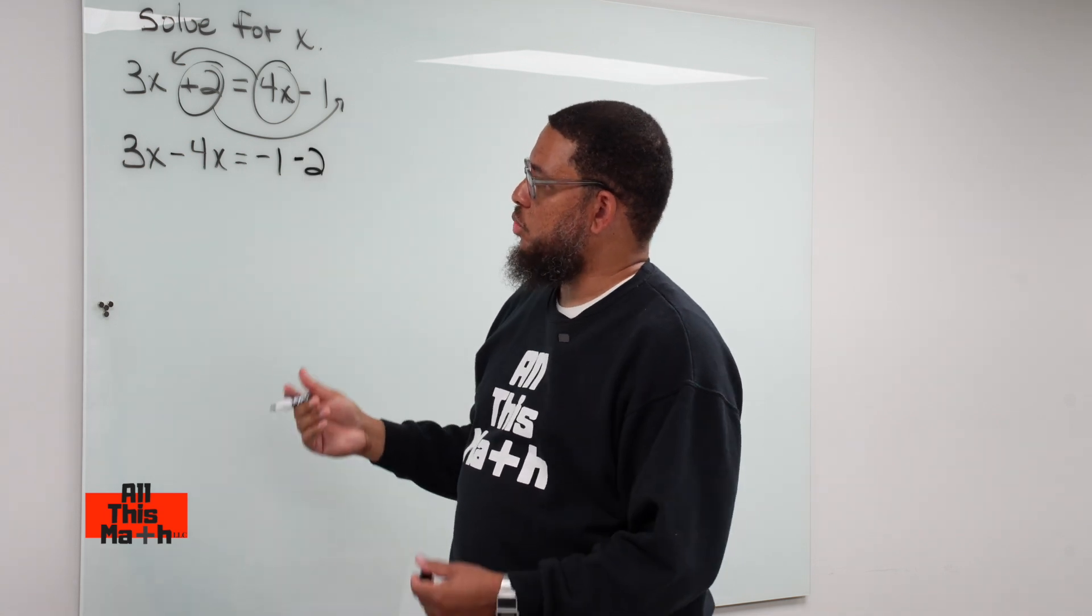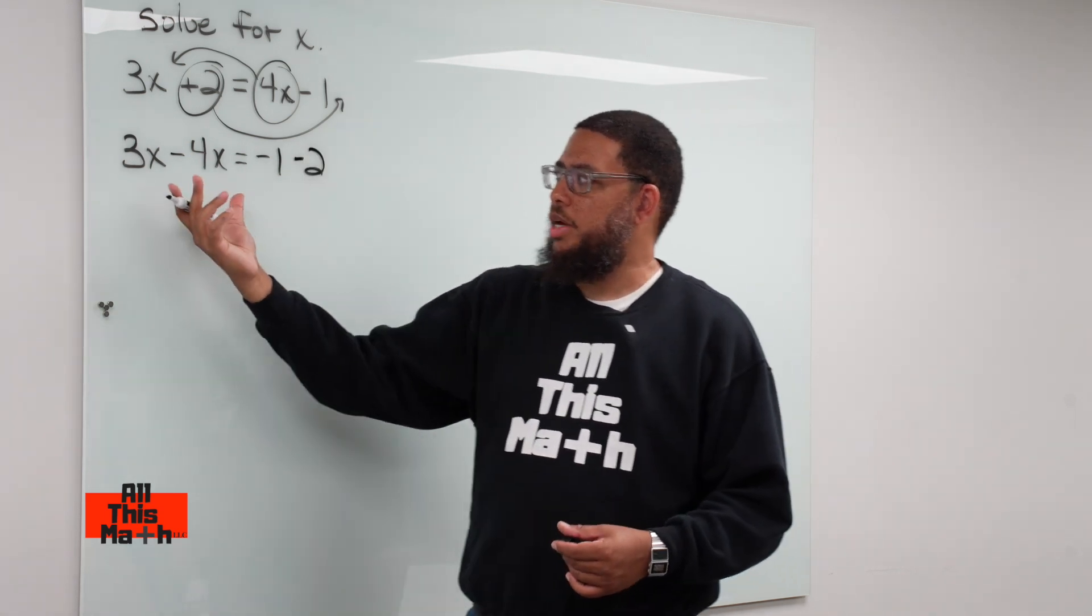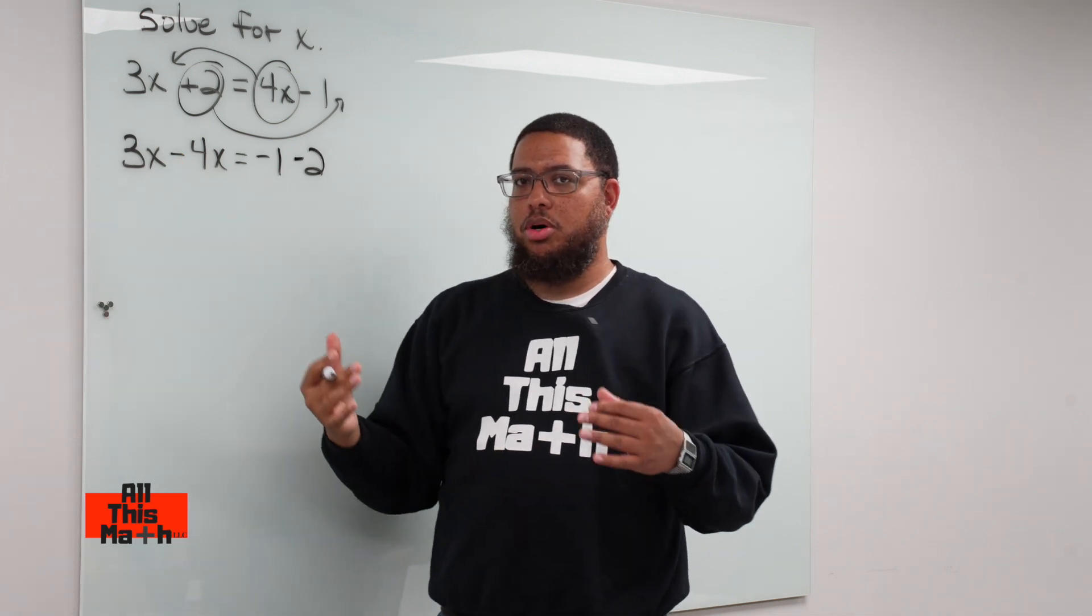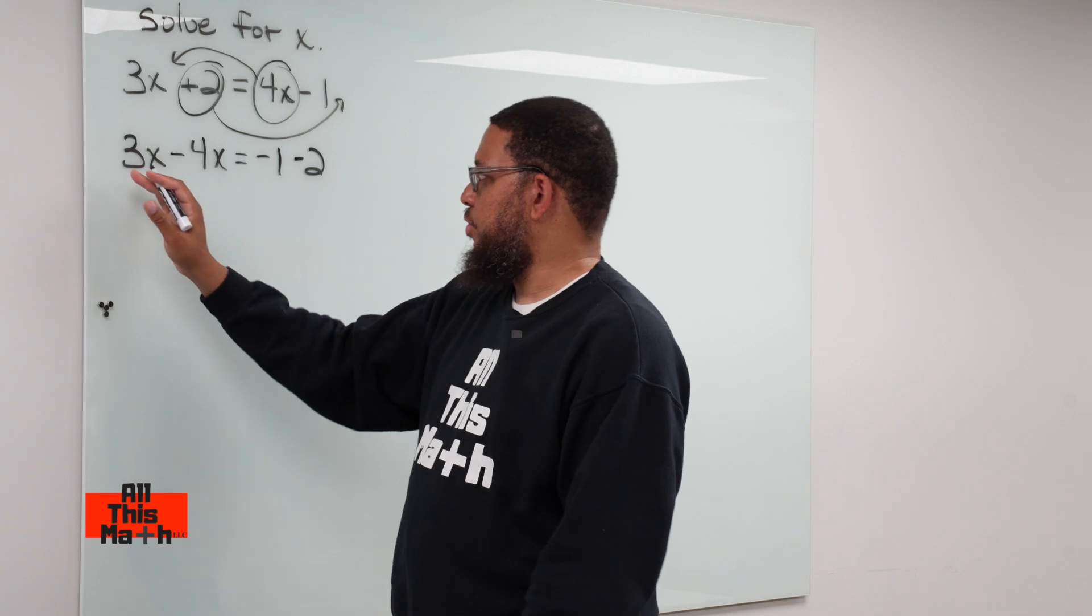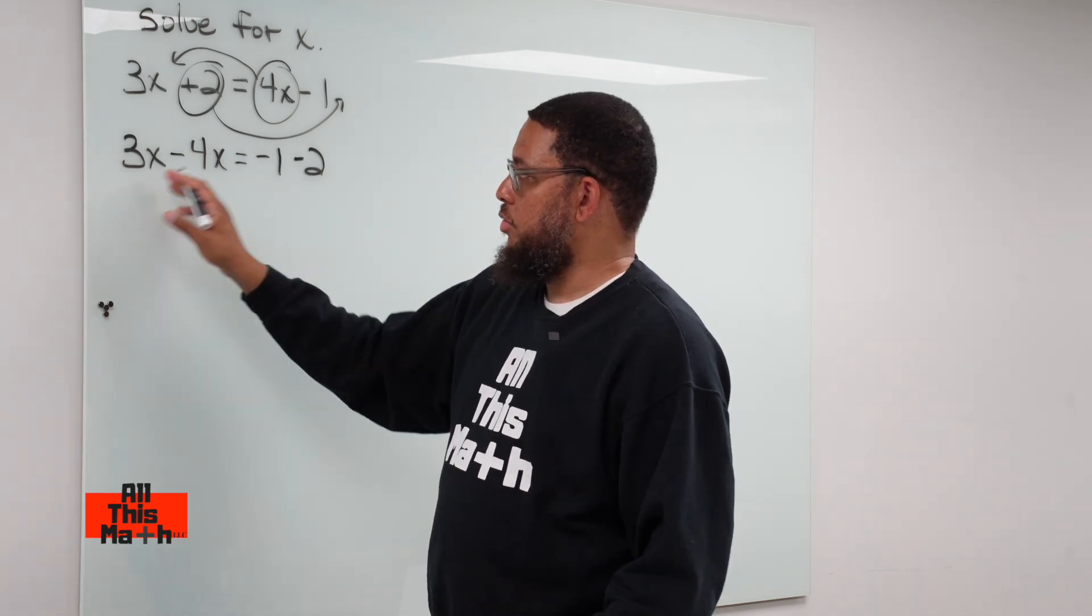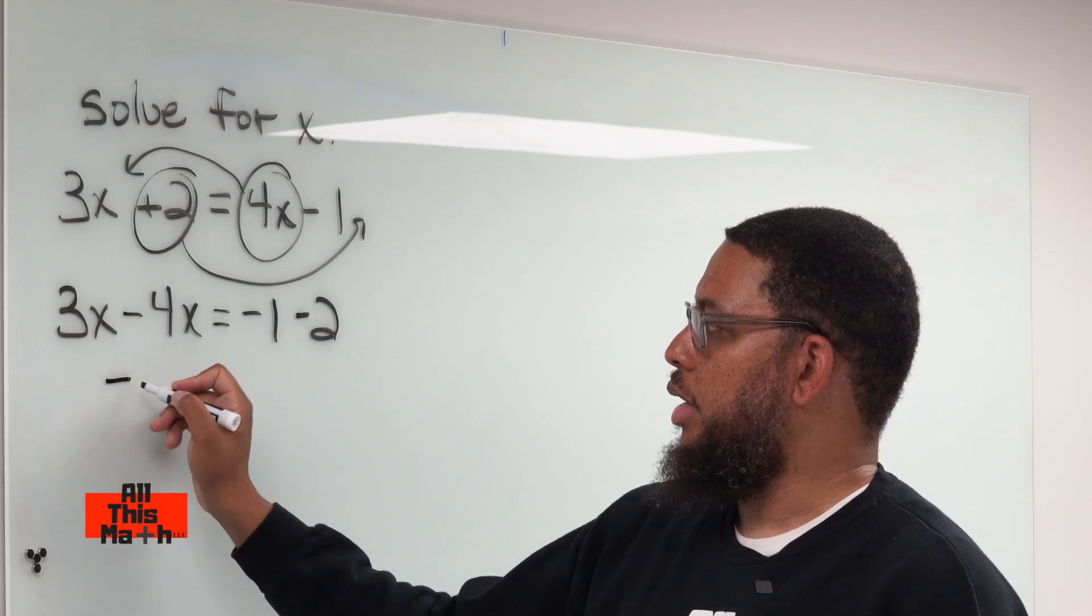Now why is transposing helpful? Because transposing is helpful because once you have the same types of terms together on one side of the equation, you can do something that we call combined like terms. So now we have 3x take away 4x. How many x's are we left with? You got 3 of them, you take away 4 of them, you're left with negative 1 of them.